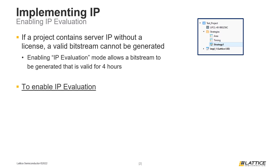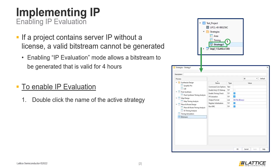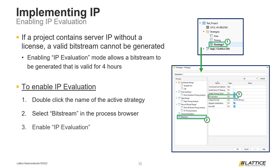To enable the IP Evaluation setting, double-click the name of the active strategy in Radiant's File List tab. This will open the strategy setting configuration window. In the left side of this window, select the Bit Stream tab from the Process Browser section. In the area with the strategy settings for this section, checkmark the IP Evaluation checkbox. Once this has been done, click OK to confirm the changes to the strategy.